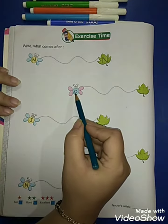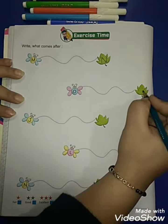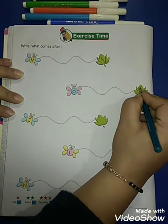Now which letter is this? O. So what comes after O? P. So I will write P like this.